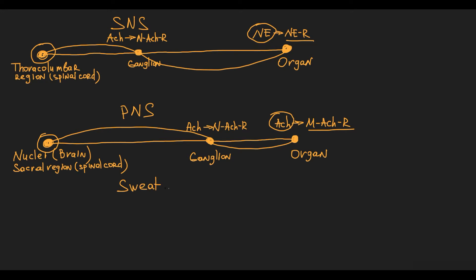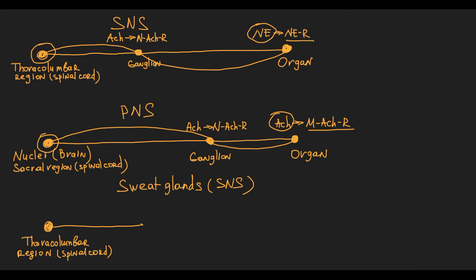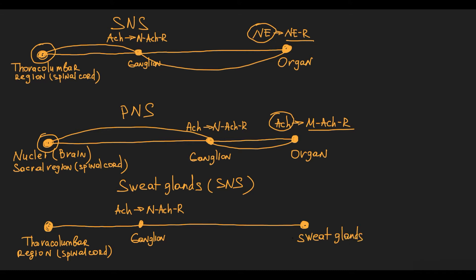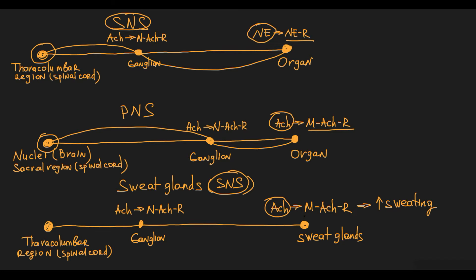Sweat glands are exceptions to the rule. Sweat glands are innervated by the sympathetic nervous system, so from the thoracolumbar region originates a short preganglionic neuron connected to a sympathetic ganglion using acetylcholine on nicotinic receptors. From the ganglion originates a postganglionic neuron connected to sweat glands — and the key feature is that this postganglionic neuron uses acetylcholine acting on muscarinic acetylcholine receptors on sweat glands, thereby stimulating sweating. This makes sweat glands unique because sympathetic postganglionic neurons here use acetylcholine, and the organ has muscarinic receptors.